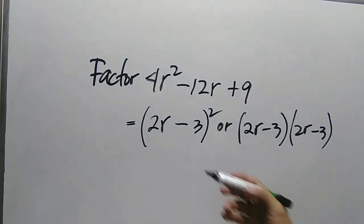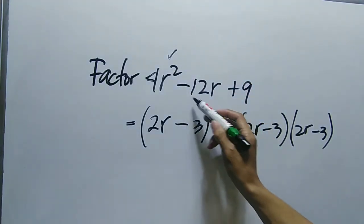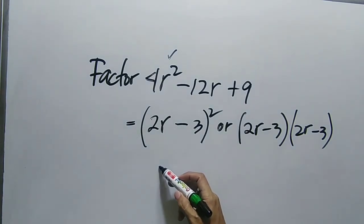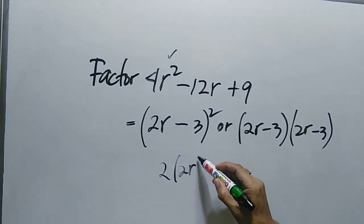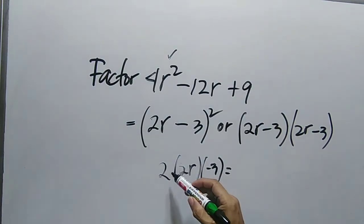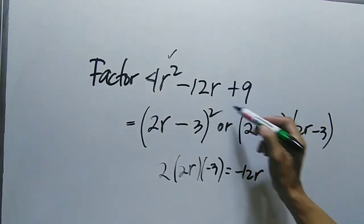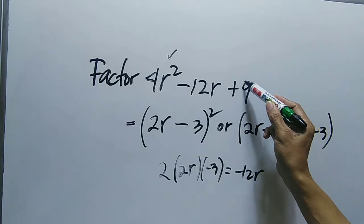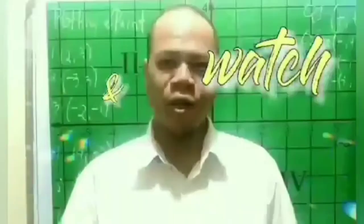The first term: when we square 2r, the result is 4r squared. The middle term negative 12r is twice the product of the first and second term — twice the product of 2r and negative 3 is negative 6r, times 2 gives negative 12r. The last term: negative 3 squared is positive 9.